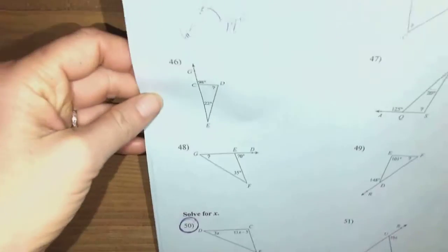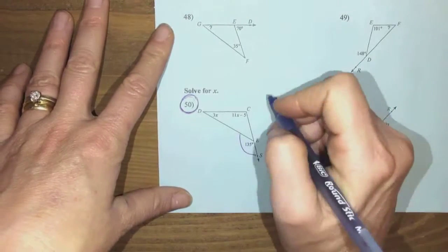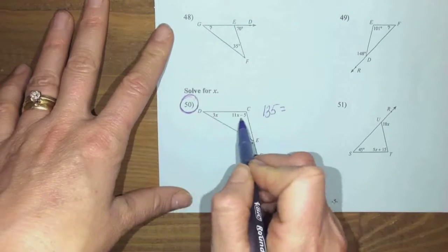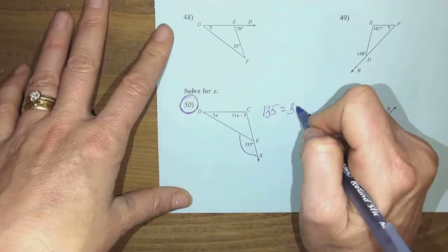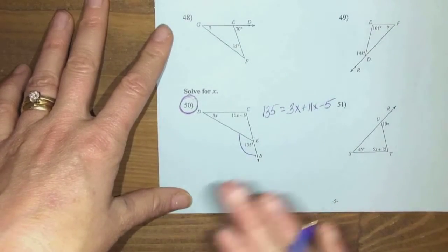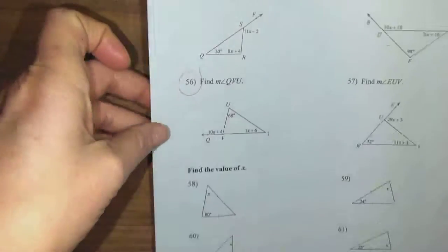Next one is number 50. I have an exterior angle here. It equals these two angles put together, or sum together, and then I would like you to solve that. I'm just starting that one for you.